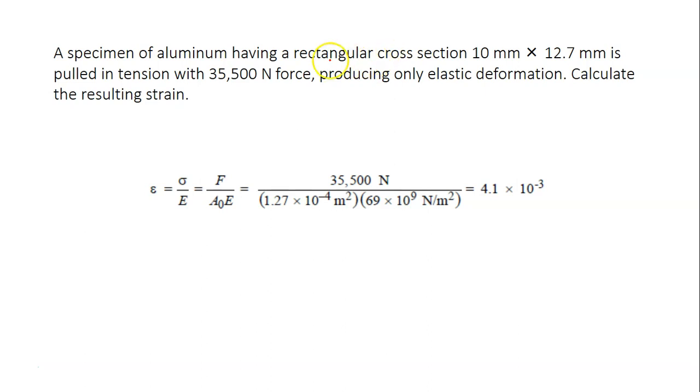The first question here: a specimen of aluminum having a rectangular cross-section 10 mm by 12.7 mm is pulled in tension with 35,500 Newton force, producing only elastic deformation. Calculate the strain.